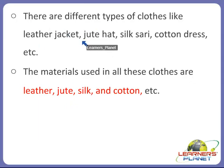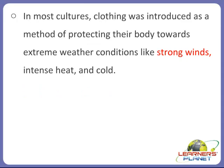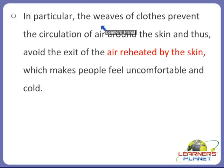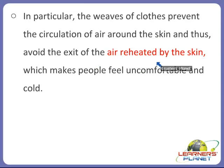Different types of clothes are made up of different materials, and in most cultures clothing was introduced as a method of protecting the body from extreme weather conditions like strong winds, intense heat, and cold. In particular, the weaves of clothes prevent the circulation of air around the skin and thus avoid the exit of air reheated by the sun, which makes people feel uncomfortable and cold.